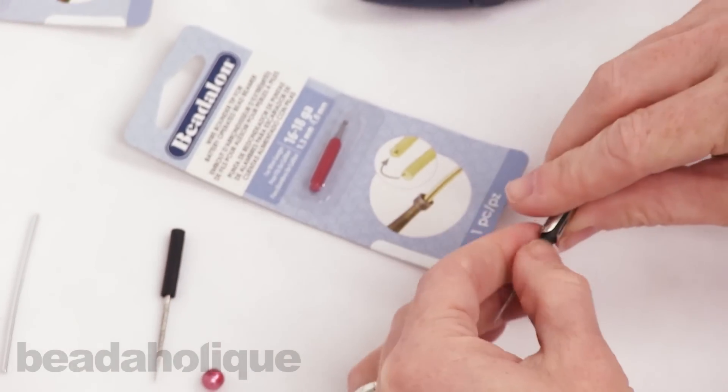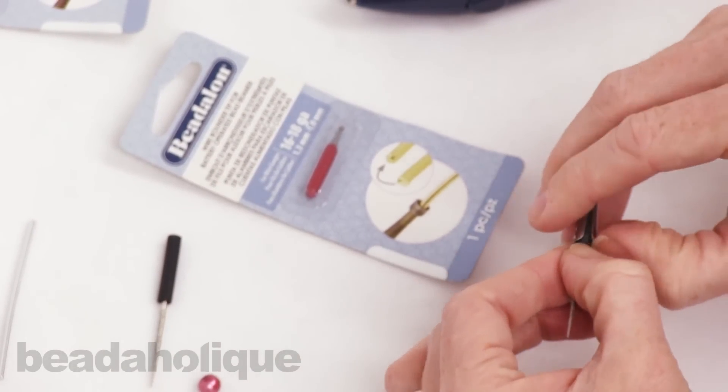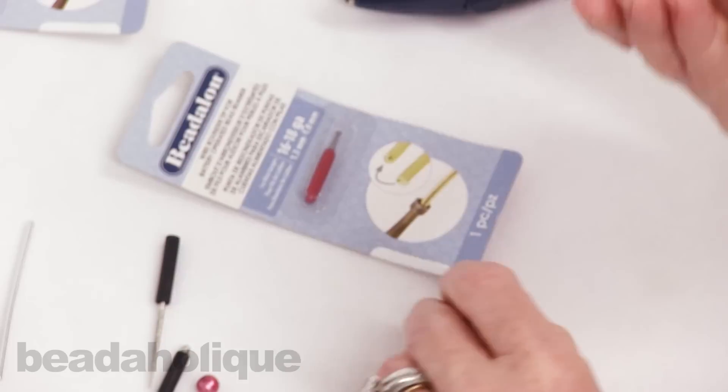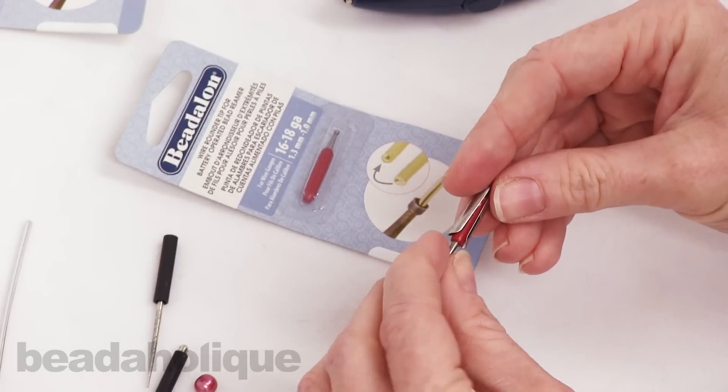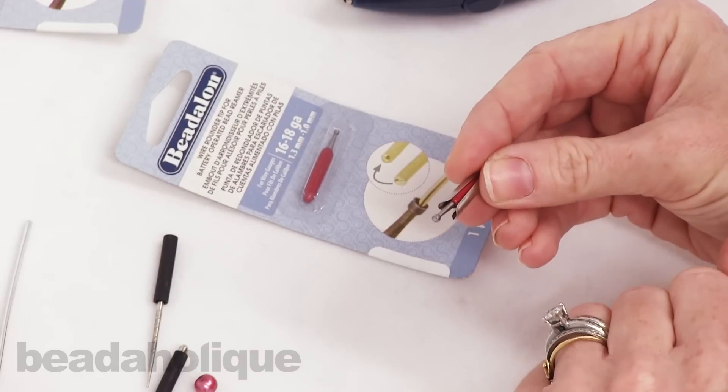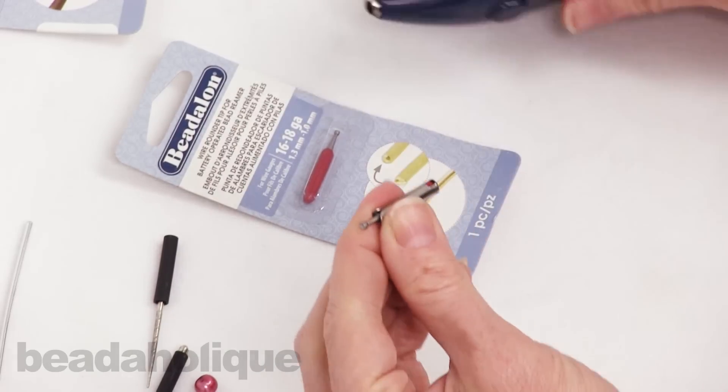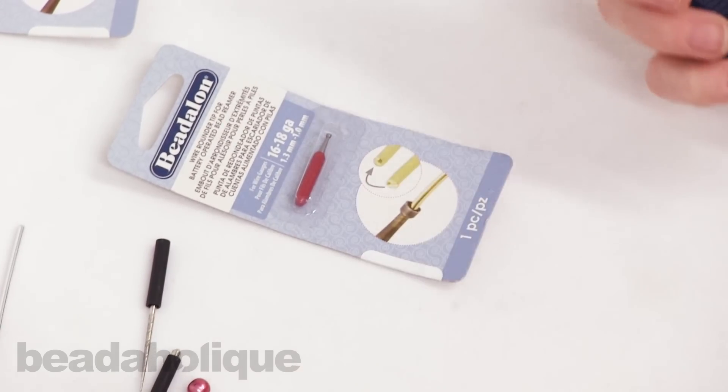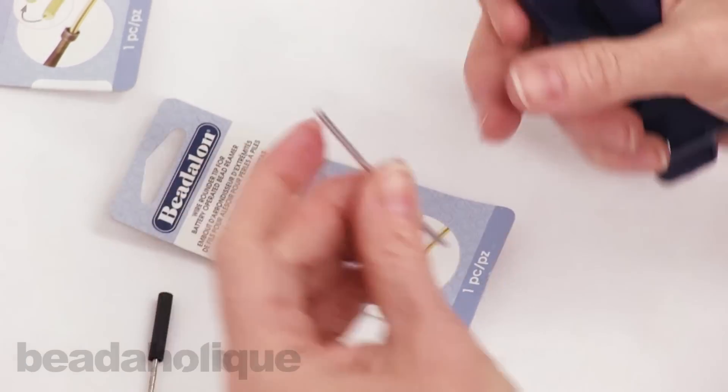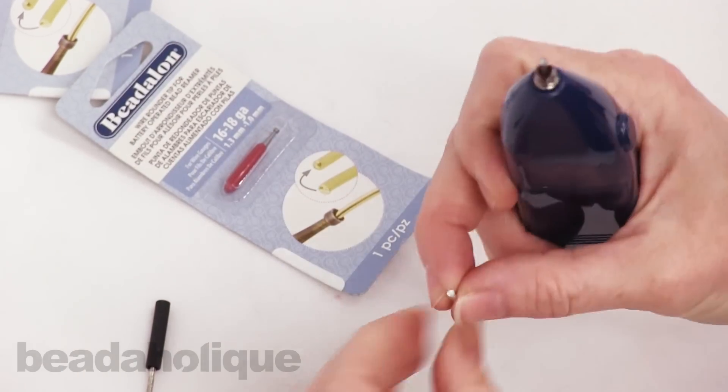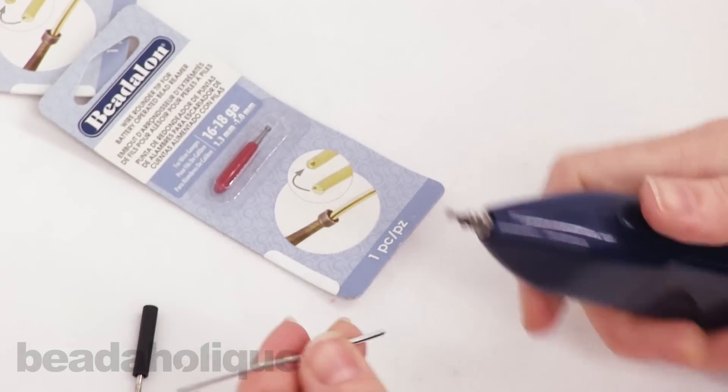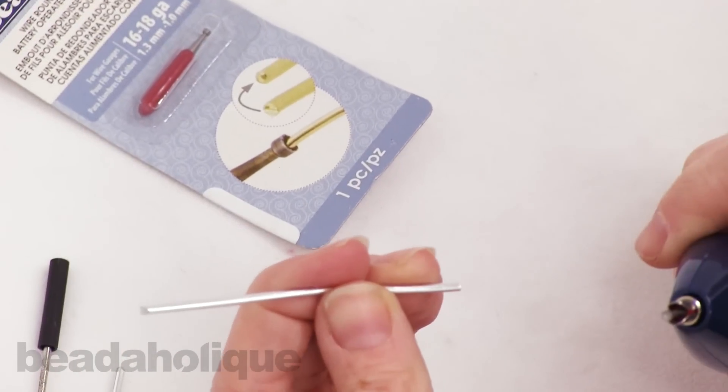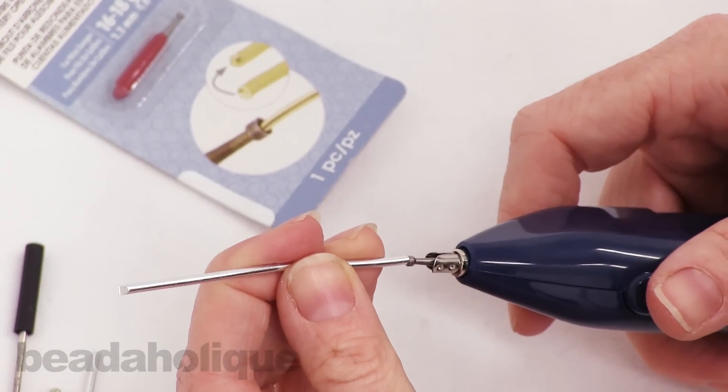So you're going to take out the tip you used for expanding your pearl hole size. You're going to keep this casing and you're going to slide the wire rounder tip right into it and then you're going to put it into your tool. You're going to take your wire with the rough edge and you're going to place it into the cup portion of the tip.